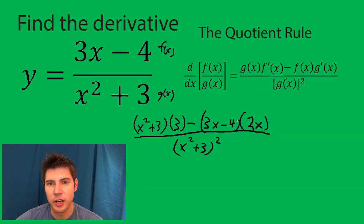Now we can simplify the top. So first we'll distribute and then combine like terms. 3x squared plus 9 minus 6x squared plus 8x.